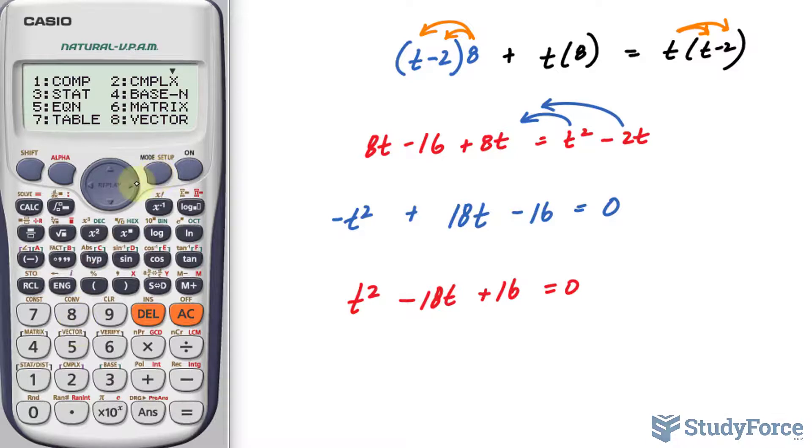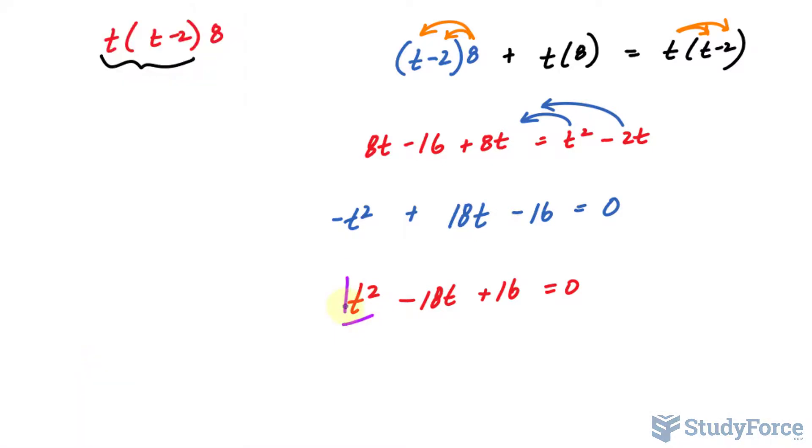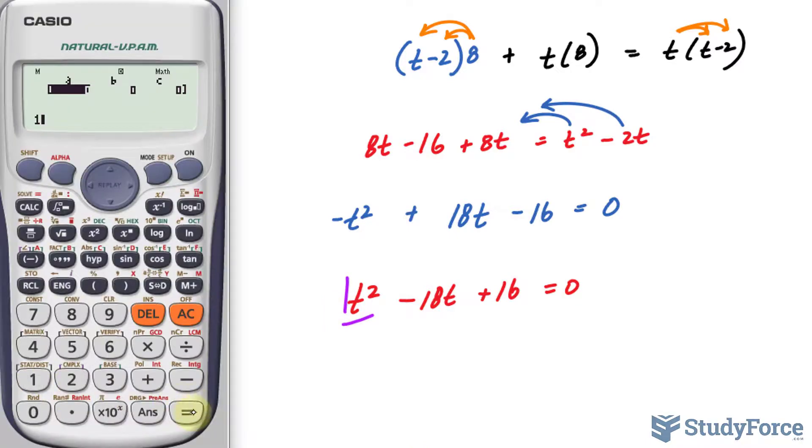So to make things easier, we click mode, five, three, and we type in the leading coefficients. So for this, it's one, type in one, minus eighteen, and sixteen.